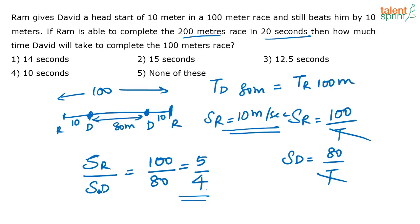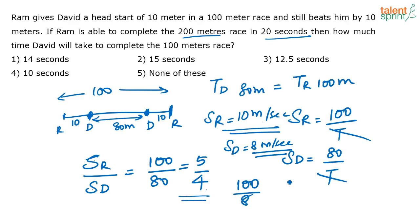So if this is the speed of Ram, what is the speed of David? We know the speed of Ram to the speed of David is in the ratio of 5 is to 4. So if the speed of Ram is 10, then the speed of David has to be 8 meters per second. Now the question is, what time will David take to complete the 100 meter race? That is 100 divided by 8, which equals 12.5 seconds — that is option 3.